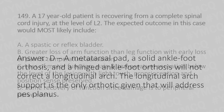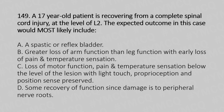Question number 149: A 17-year-old patient is recovering from a complete spinal cord injury at the level of L2. The expected outcome most likely includes: Option A, a spastic or reflex bladder; Option B, some recovery of function since damage is to the peripheral nerve roots; Option C, loss of motor function, pain, temperature sensation below the level of lesion with light touch, proprioception, and position sense preserved; Option D, greater loss of arm function than leg function with early loss of pain and temperature sensation.